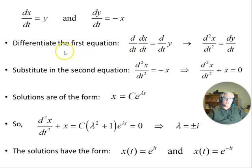So we differentiate the first equation. d/dt of dx/dt on both sides. d/dt gives us d²x/dt² equals dy/dt. And then from there we can substitute in the second equation. Remember, dy/dt is minus x. So we put that in there. That gives us the equation that we need to solve for this system is d²x/dt² plus x equals zero.